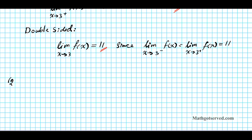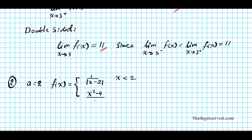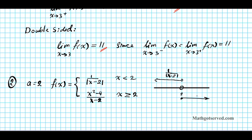Question two: what if we have a equals two for the piecewise defined function f of x equals one over the absolute value of x minus two for x less than two, and x squared minus four over x minus two for x greater than or equal to two? Let's orient these two functions on our number line. The breaking point is at two. To the left of two, excluding two, the function in play is one over the absolute value of x minus two. And to the right, including two, the function is x squared minus four over x minus two.